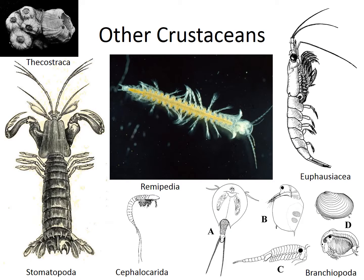There are a variety of other crustaceans out there. Euphausiaceans are krill — the whales eat them. There are branchiopods, which are a variety of weird little things sometimes found in vernal pools in the western United States. There are cephalocaridians, which are really weird things, and remipedes, found only in deep water caves. There are stomatopods, which are mantis shrimp. And one you don't often think about are barnacles, Thecostraca — barnacles are actually arthropods, and when they are little, they have nauplius larvae just like every other crustacean.